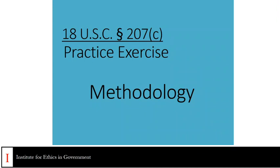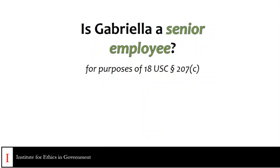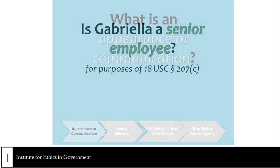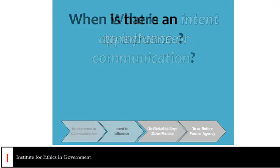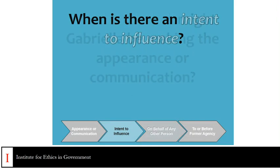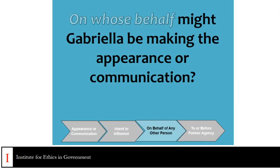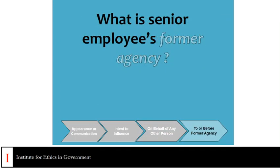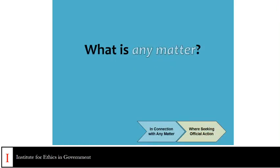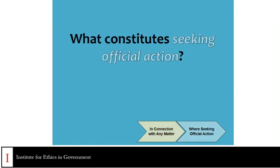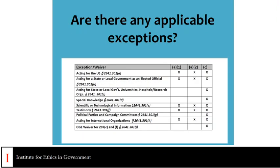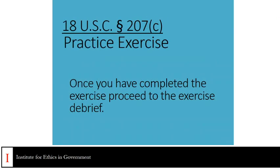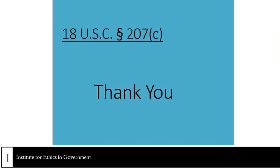In our practice exercise, we'll be using the following methodology: Is Gabriela a senior employee for purposes of 207C? What is an appearance or communication? When is there an intent to influence? On whose behalf might Gabriela be making the appearance or communication? What is a senior employee's former agency? What is any matter? What constitutes seeking official action? And are there any applicable exceptions? Once you have completed the exercise, proceed to the exercise debrief, where we will apply the 207C provisions to Gabriela's proposed post-employment activities. Thank you.